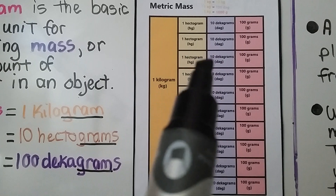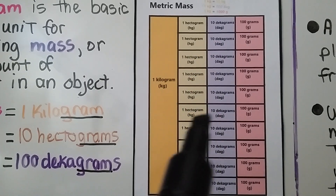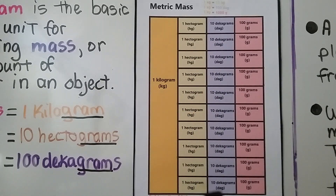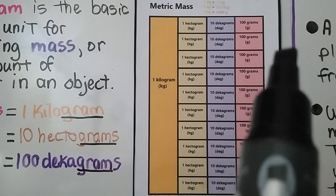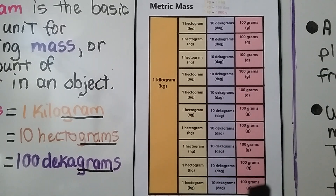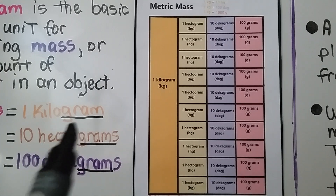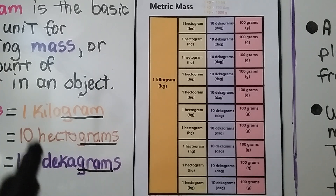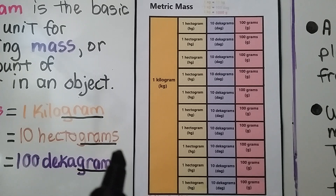And 100 decagrams would be the same thing as 1 kilogram. And 1000 grams would be the same thing as 1 kilogram. You notice that all the words have the word gram in them — kilogram, hectagram, decagram. They all say gram. So the gram is the basic metric unit for measuring mass, or the amount of matter in an object.